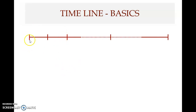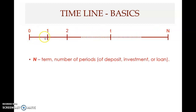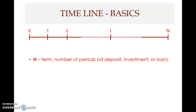Let's look at the basics of a timeline. You have a long line with time specified above it. Zero means now, the present, and also the beginning of the first period. One is the end of the first period or the beginning of the second period. In general, t is the end of period t, and n is the end of period n.